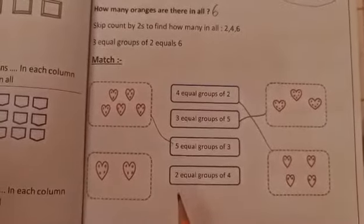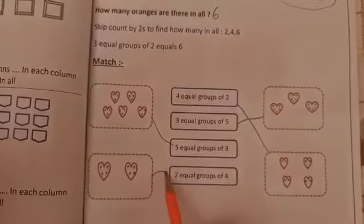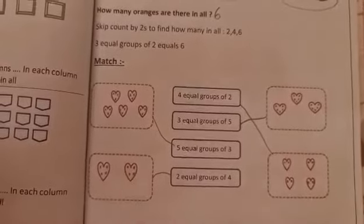The last one, two equal groups of four. They are two equal groups of four dots.